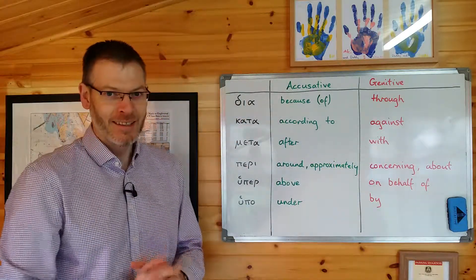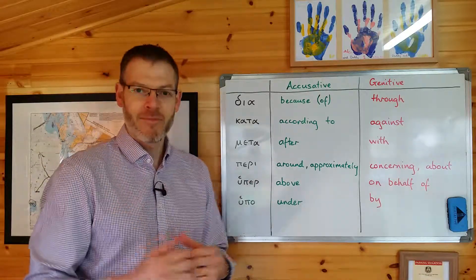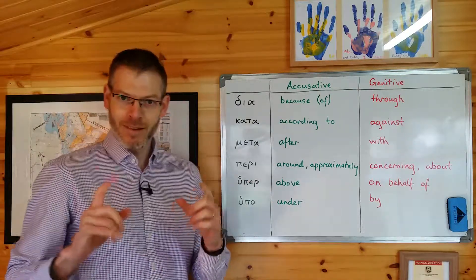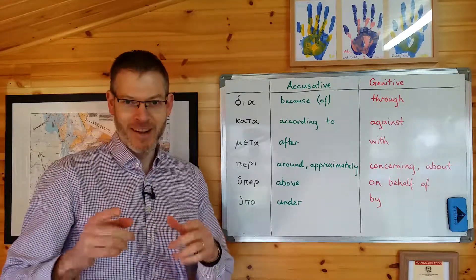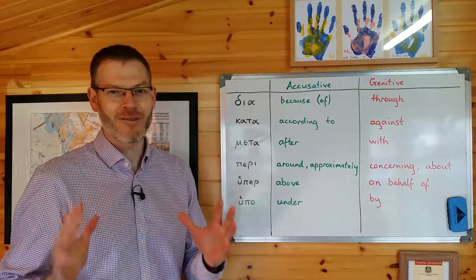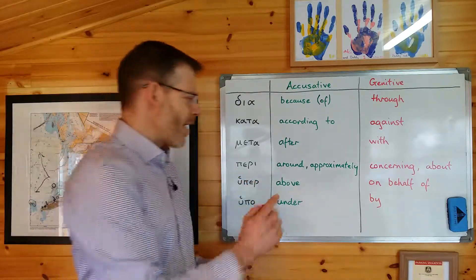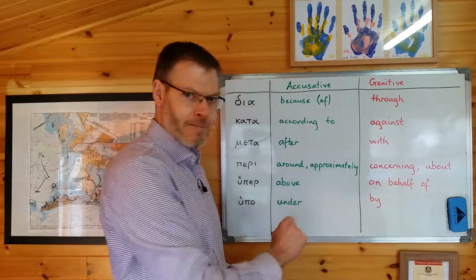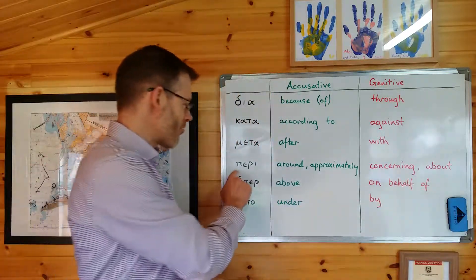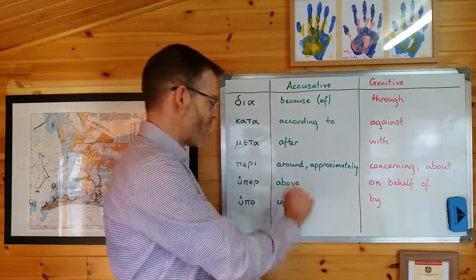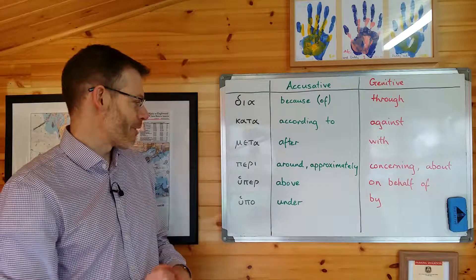Number four: peri. Think about the perimeter of my garden. I'm a terrible gardener — looking out through my study window right now, it's a terrible mess. The perimeter of my garden, when you look around, is very concerning. Peri — perimeter of my garden — when you look around — is very concerning.